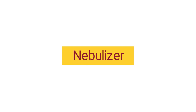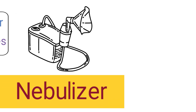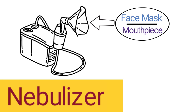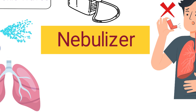The third type of aerosol delivery system is a nebulizer. A nebulizer is a device that uses compressed air or ultrasonic waves to break up liquid into aerosol particles that can be inhaled into the lungs. It requires the use of a face mask or mouthpiece for drug delivery to occur. Nebulizers are the preferred drug delivery method for patients who are unable to use an inhaler or for those who require high doses of medication.